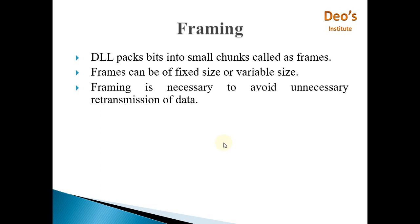then you need to retransmit the entire data again. To avoid this, the data link layer packs bits into small chunks called frames. These frames are transmitted from sender to receiver. If one frame gets corrupted or lost in the network, then only that frame needs to be resent, not the entire data. So this avoids unnecessary retransmission.